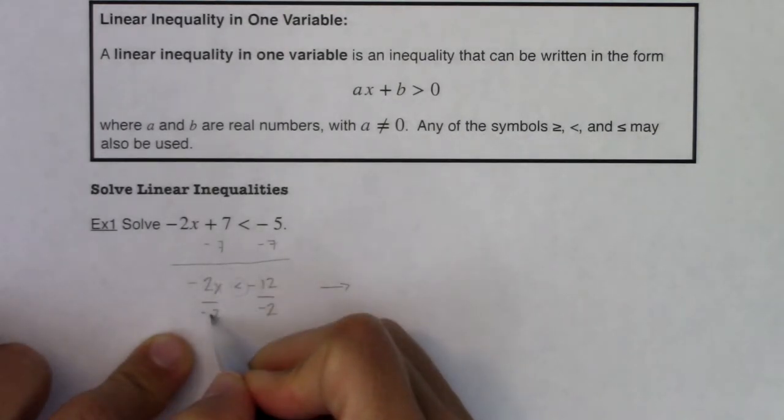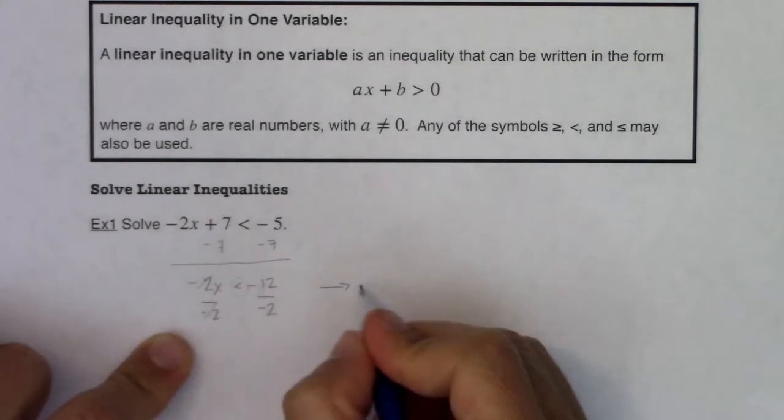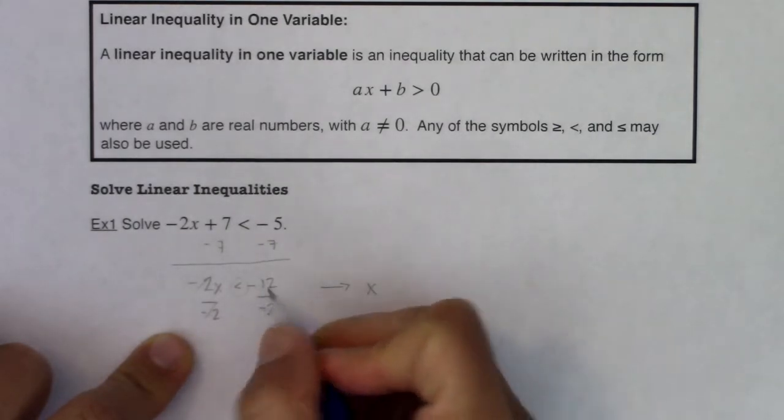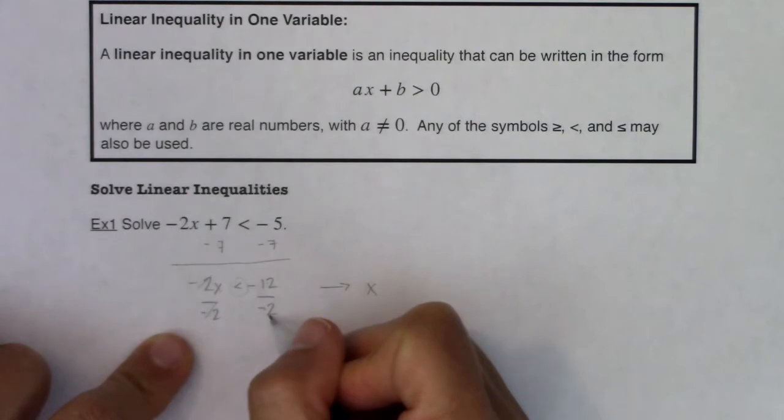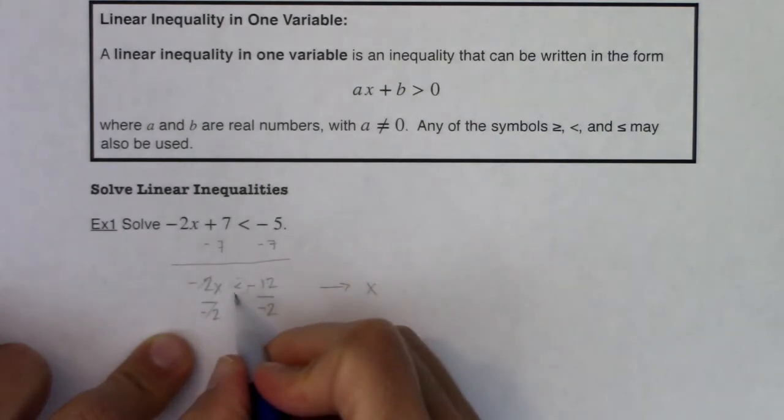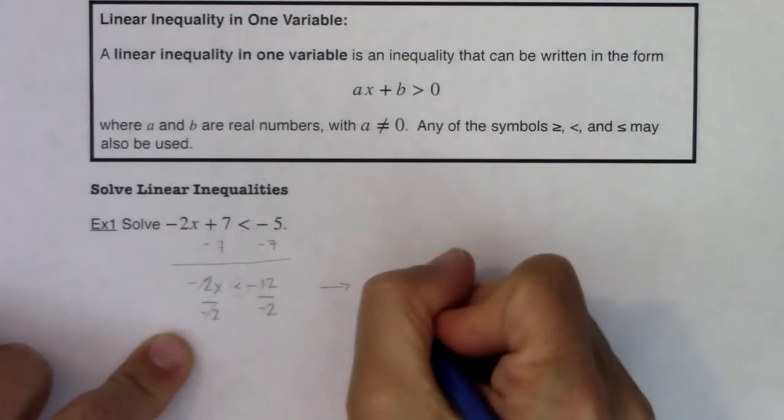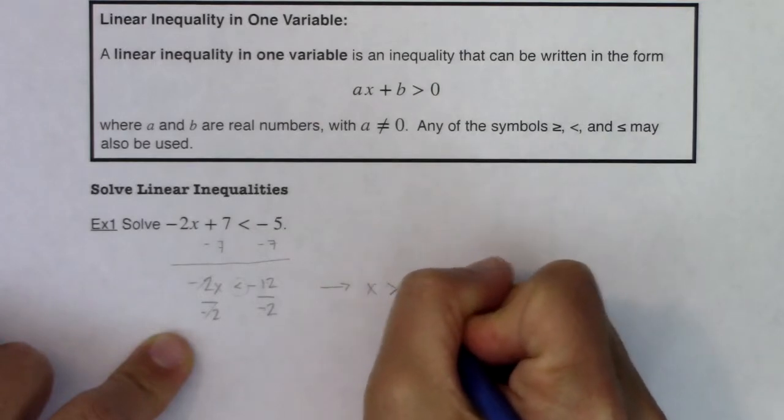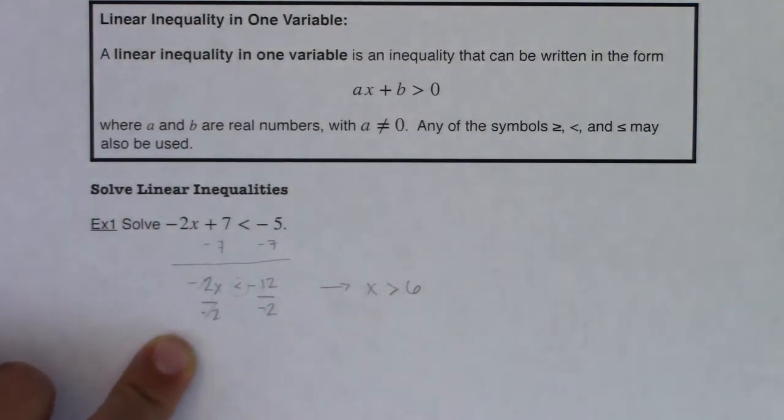So what I mean by that is, yes, -2x divided by -2, those divide out and you get x. And yes, -12 divided by -2 is positive 6. But I need to change the direction of this inequality and make this greater than 6. So when you multiply or divide an inequality by a negative number, you have to change the direction of that inequality.